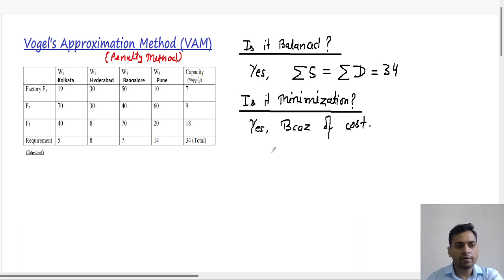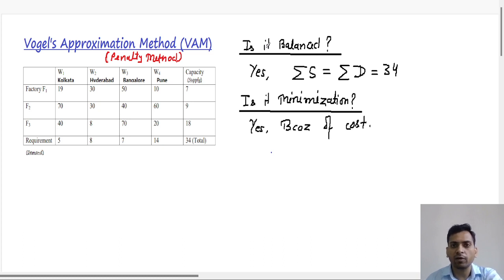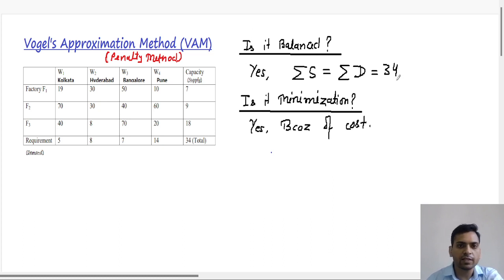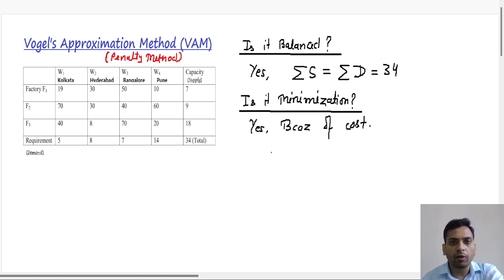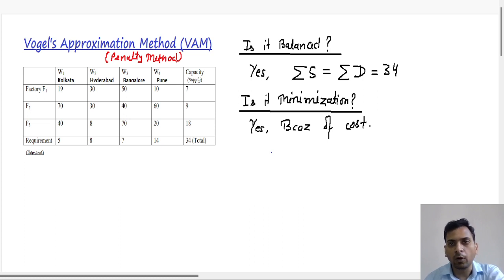Hello everyone, today we will see Vogel's Approximation Method. The first task in a transportation problem is always to test if the problem is balanced or not. This problem is balanced because the sum of supply equals the sum of demand, which is 34. Second, we check if the problem is of minimization or not — since this problem is associated with cost, it is a minimization problem.